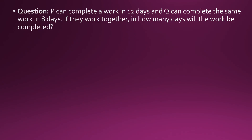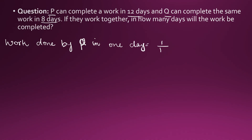P can complete a work in 12 days and Q can complete the same work in 8 days. If they work together, how many days will the work be completed? Work done by P in 1 day is 1 by 12. Similarly, work done by Q in 1 day will be 1 by 8. So when they are working together, work done by both P and Q in 1 day working together: